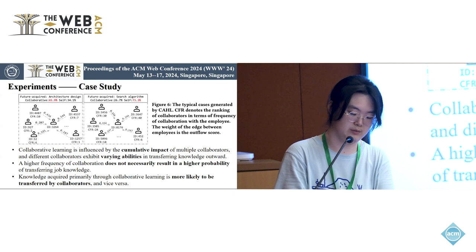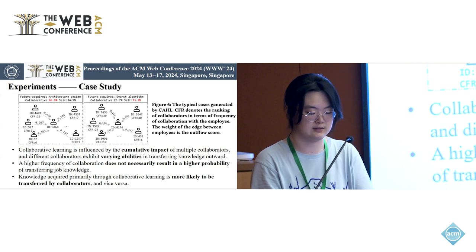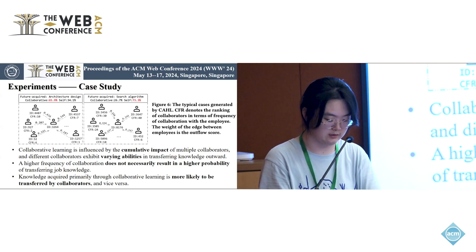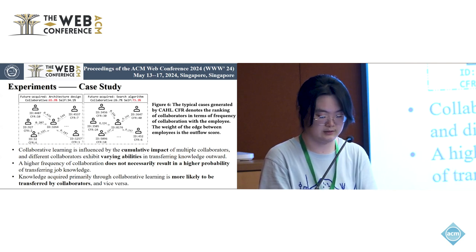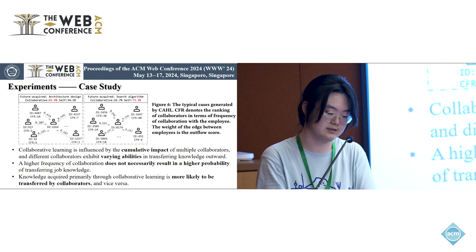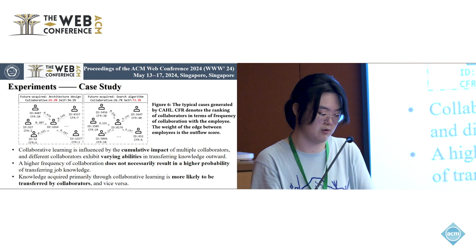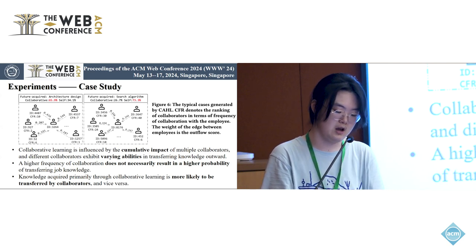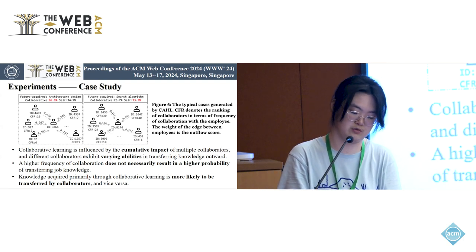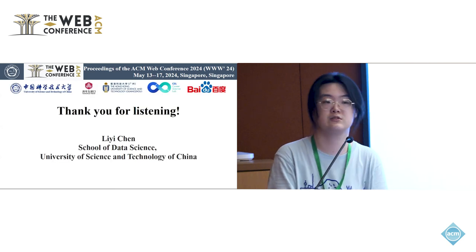We present two typical cases from the testing results. The results indicate that collaborative learning is influenced by the cumulative impact of multiple collaborators. Different collaborators exhibit varying abilities in transferring knowledge outward. Besides, a higher frequency of collaboration does not necessarily result in a higher probability of transferring job knowledge, and knowledge acquired primarily through collaborative learning is more likely to be transferred by collaborators. The above is a brief introduction to our work.